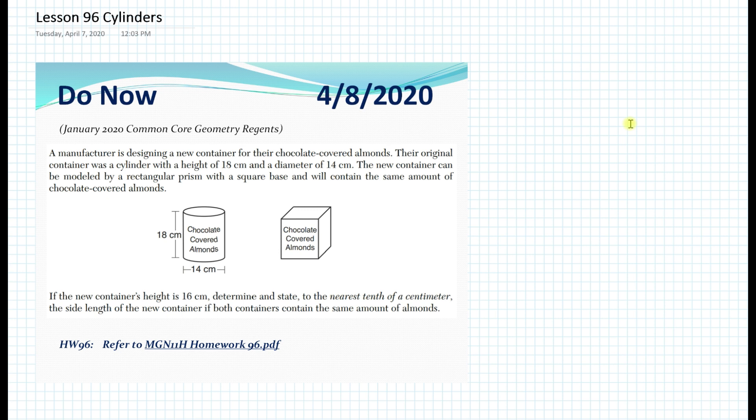And you can see this in the figure here. If the new container's height is 16 centimeters, determine and state to the nearest tenth of a centimeter the side length of the new container if both containers contain the same amount of almonds. Obviously, before we continue with the do now, we must first learn about cylinders.